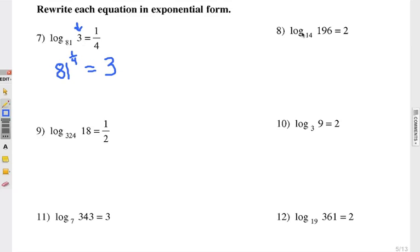Similarly, number eight: log base 14 of 196 is 2. Remember that we flip it around and we look for the base, which would be 14. That's right there. 14 to what power is 196? 2. So that's the exponent. 14 squared equals 196.